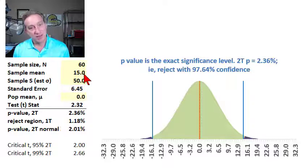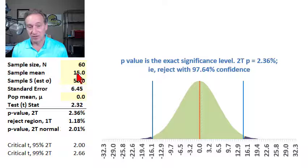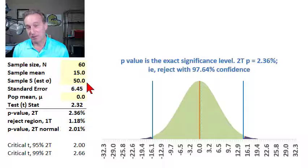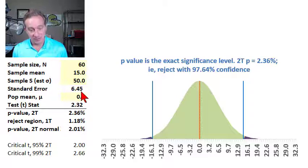So again, we're observing an average monthly return, excess return, of plus 15 basis points with a dispersion in the sample of 50 basis points.